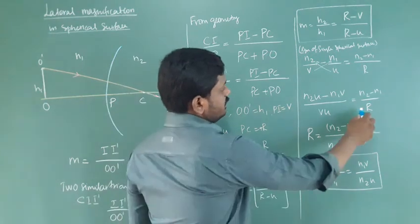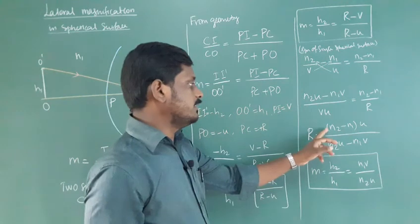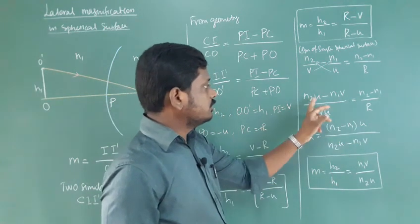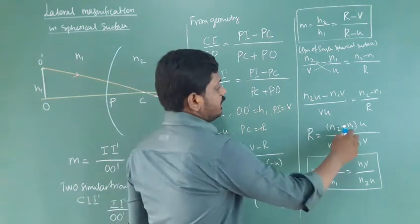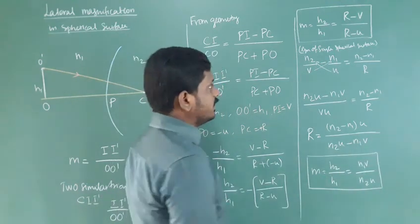Then rearrange, you will get the radius of curvature R equals N₂ minus N₁ into U. Then N₂ minus N₁ by N₂ by V.